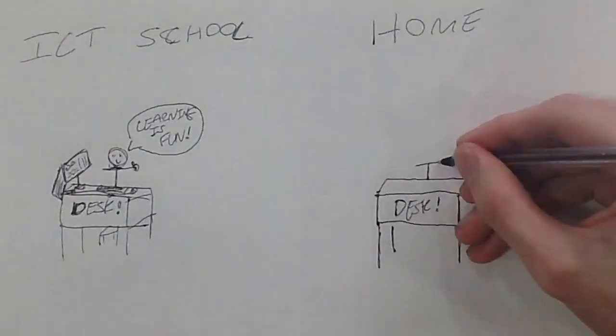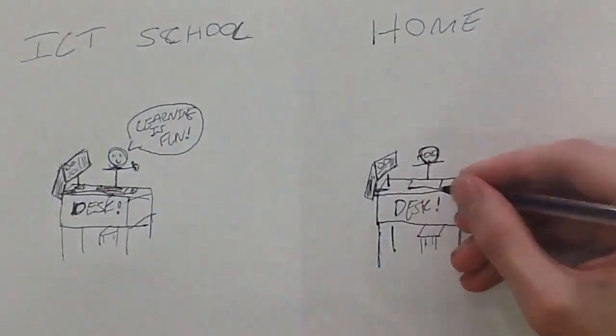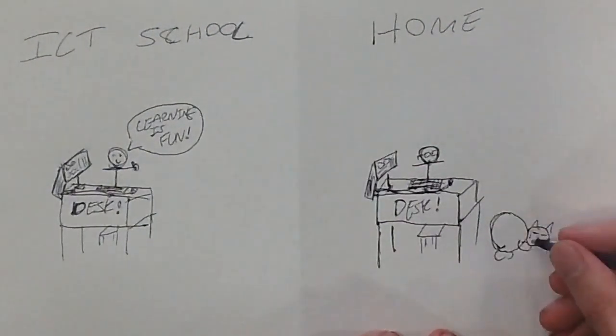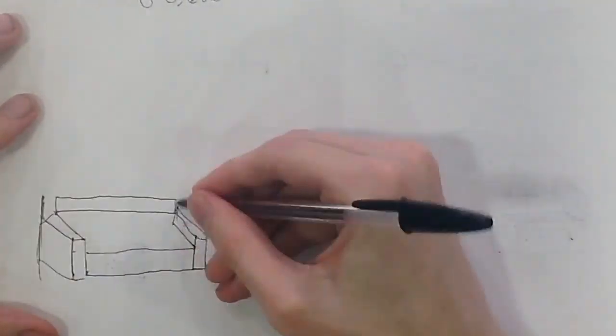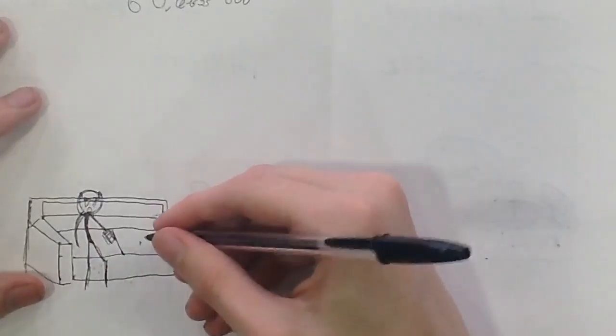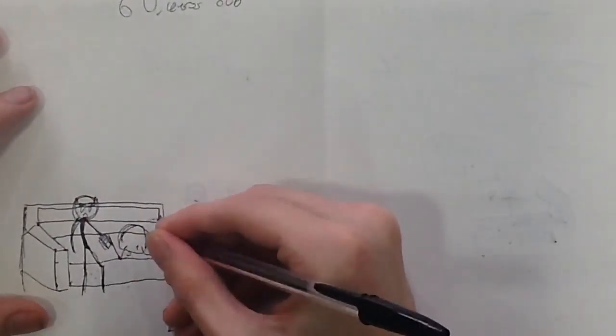By the age of 30, I would like to have a job based on those skills that allows me to work from home. By the age of 60, I'd like to relax, perhaps live at home or in a retirement home if things go not so well.